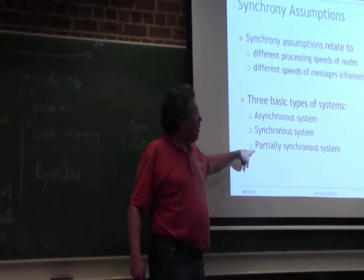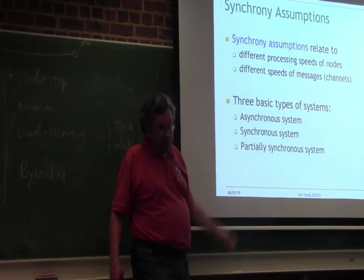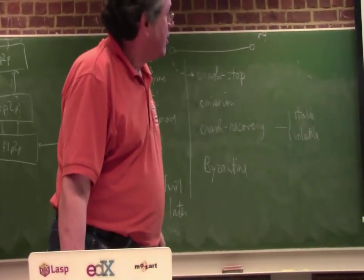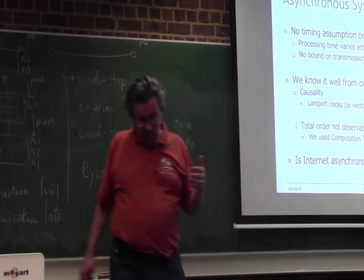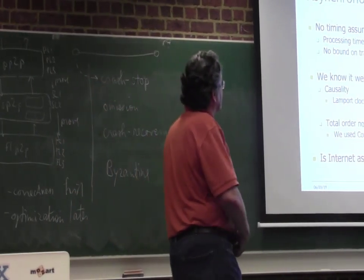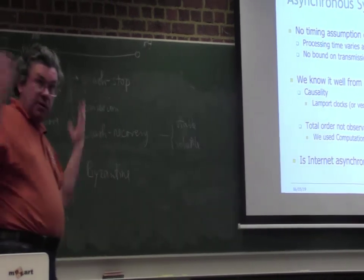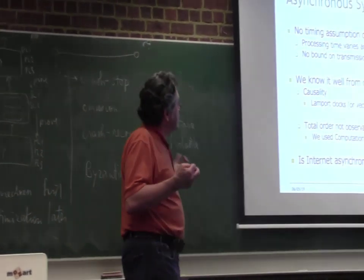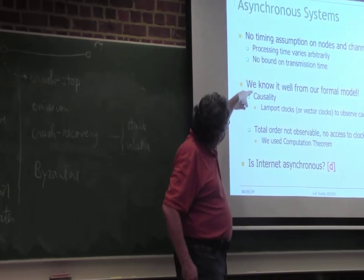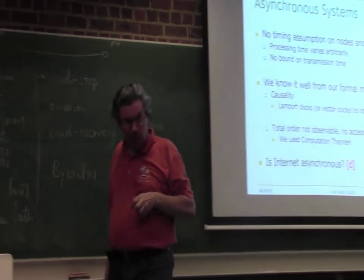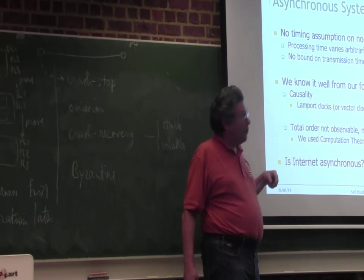It makes a big difference. The loosest, the least constraining system is the asynchronous — no timing assumption — meaning that the processing time can be arbitrary but finite. You can still observe causality, remember the Lamport clock and the vector clocks defined before, but you cannot observe the total order on such a system.